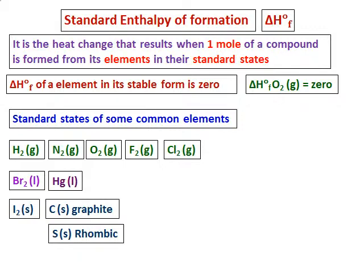It's important that we have only one mole on the product side, and it should be formed from its elements in their standard state. The delta H°f for an element in its stable standard state is zero — for example, the delta H°f for oxygen is zero, and the standard state of oxygen is O₂ gas, not O.